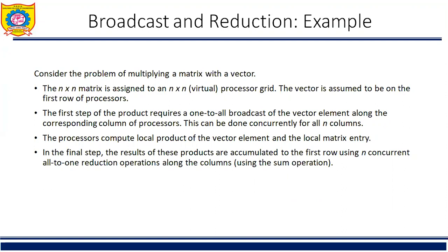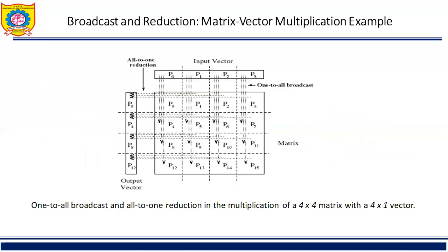In the final step, the results of this product are accumulated to the first row using n concurrent all to one reduction operations along the columns using the sum operation. As shown here, the one to all broadcast operation and all to one reduction operation will take place for performing this matrix vector multiplication using broadcast and reduction.